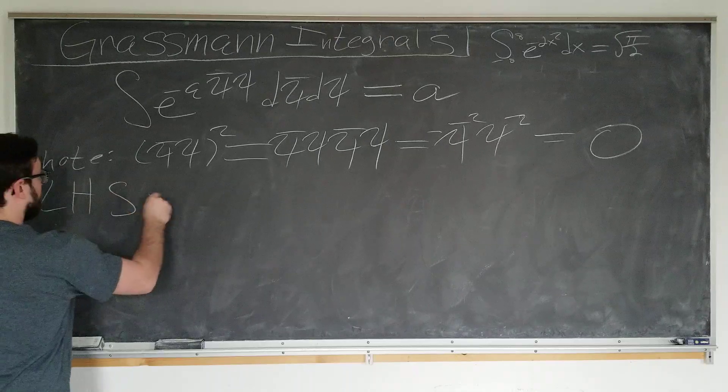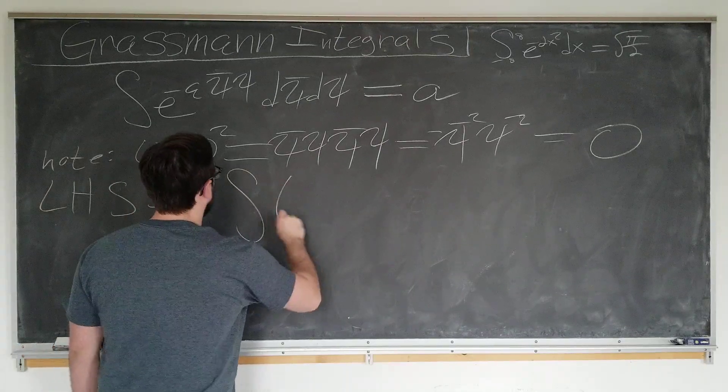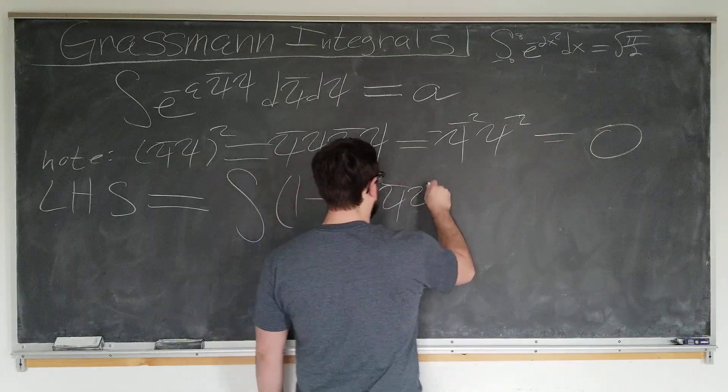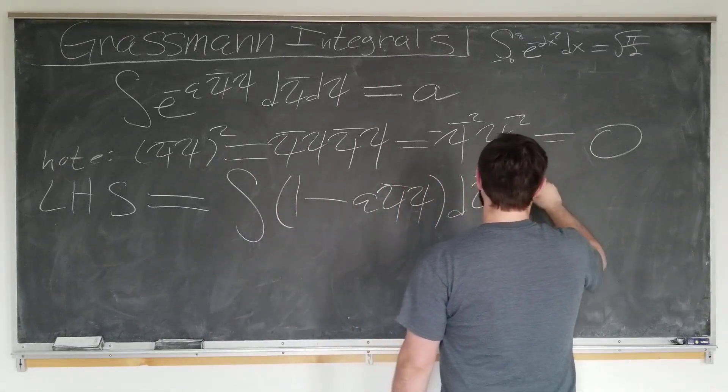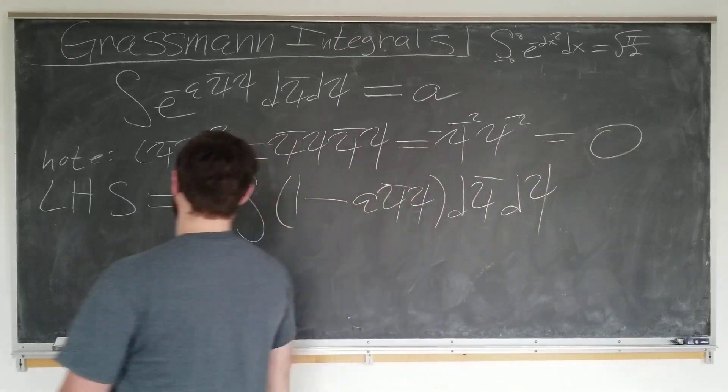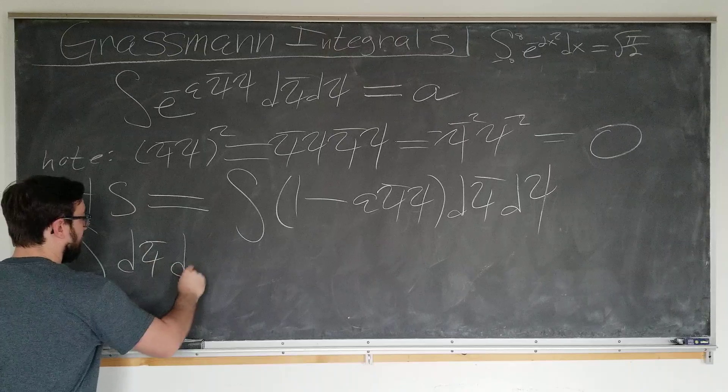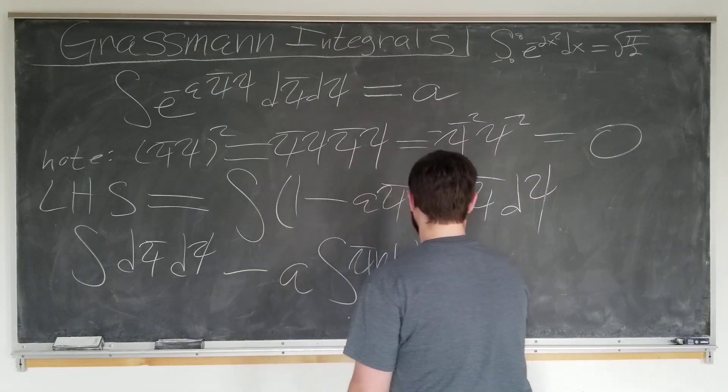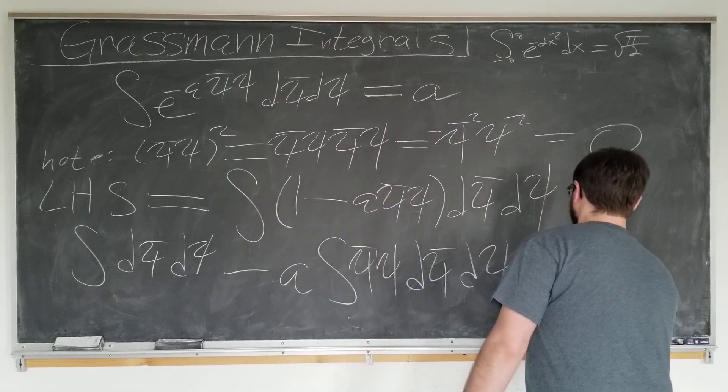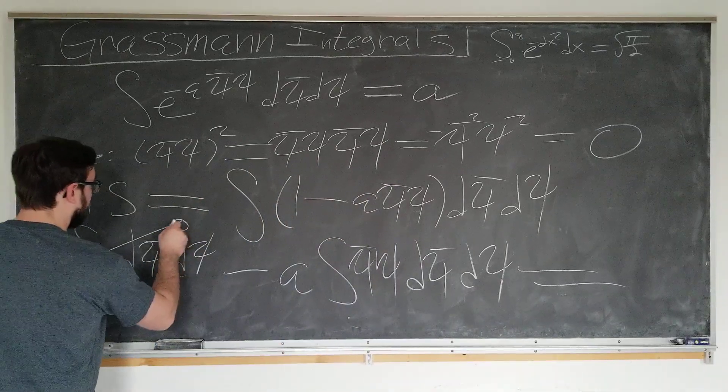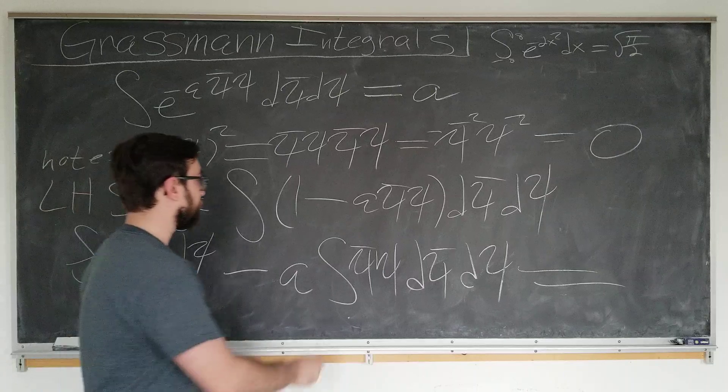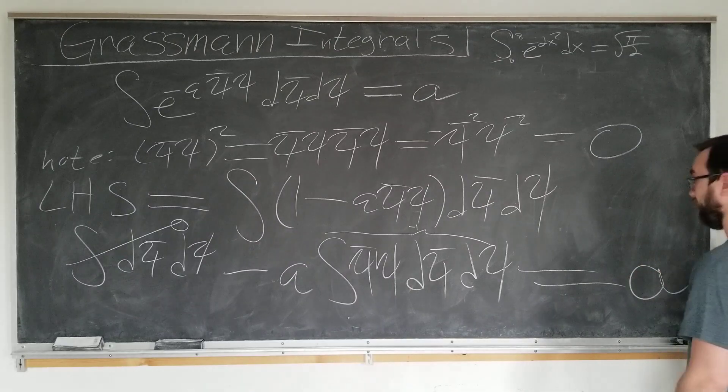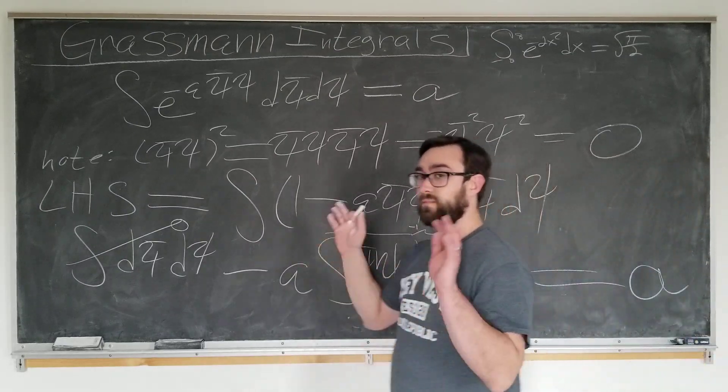Okay. Left-hand side of the expression we're considering is this integral of expanding the exponential in the Taylor series, which I hope you know. 1 minus a psi bar psi, d psi bar d psi. We can go ahead and write this as integral d psi bar d psi, minus a, integral of psi bar psi d psi bar d psi. We can immediately evaluate upon noticing that this is zero. Again, no psis to soak up the d psis. And this is minus one from what we derived earlier, a. Since we've got minus a times minus one, gives you a.